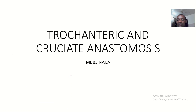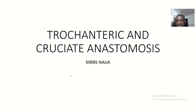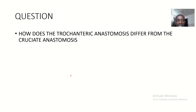Today we'll be talking about two different types of anastomosis on the femur: the trochanteric anastomosis and the cruciate anastomosis. The question is how does the trochanteric anastomosis differ from the cruciate anastomosis.